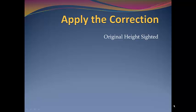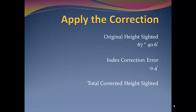Let's take our earlier height sighted, which was 67 degrees, 40.6 minutes. We will now apply the index correction error, which was minus 0.4 minutes. We will apply the two numbers to get a corrected height sighted, which is 67 degrees, 40.2 minutes.